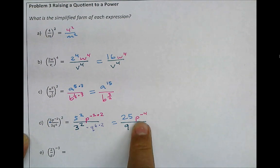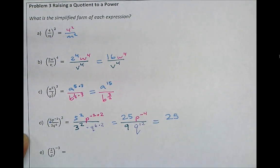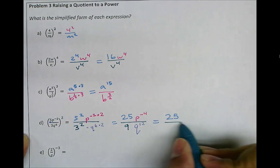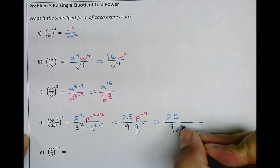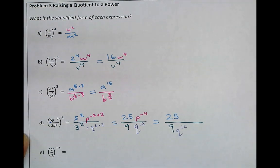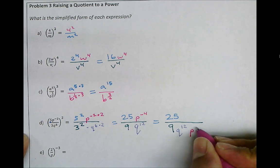And lastly, we have to take this negative exponent and make it positive. So let's keep everything else right where it is. We keep the 25 where it is. We keep the 9 where it is. We keep the q to the power of 12 right where it is. And this p to the power of negative 4 drops into the denominator, turning the exponent to a positive.